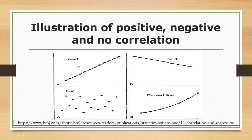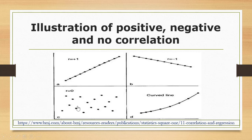Graphically, r equals positive one means a positive correlation — you can see the upward direction of the line. R equals negative one means negative correlation, and r equals zero means no correlation, where data is scattered with no clear linear direction.